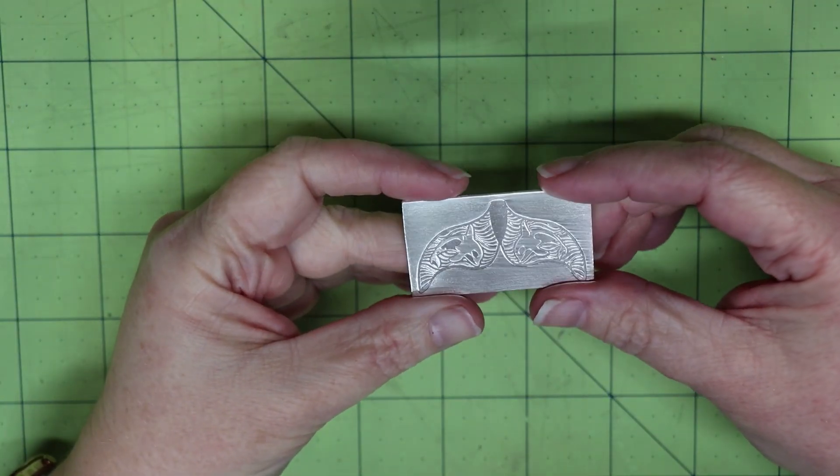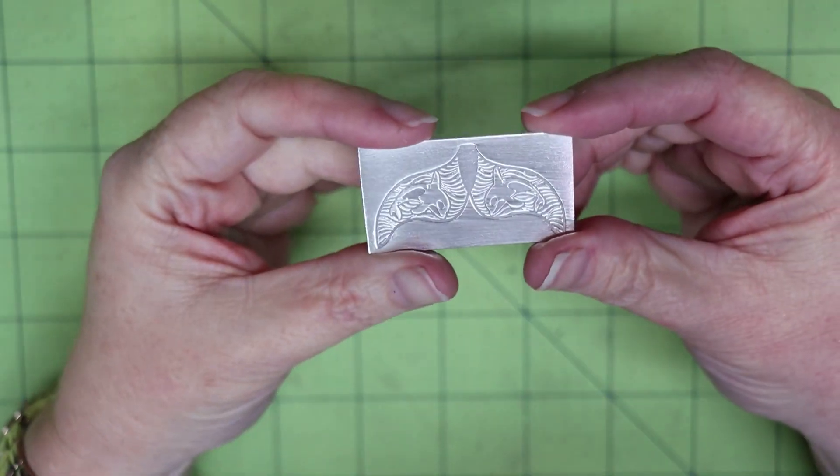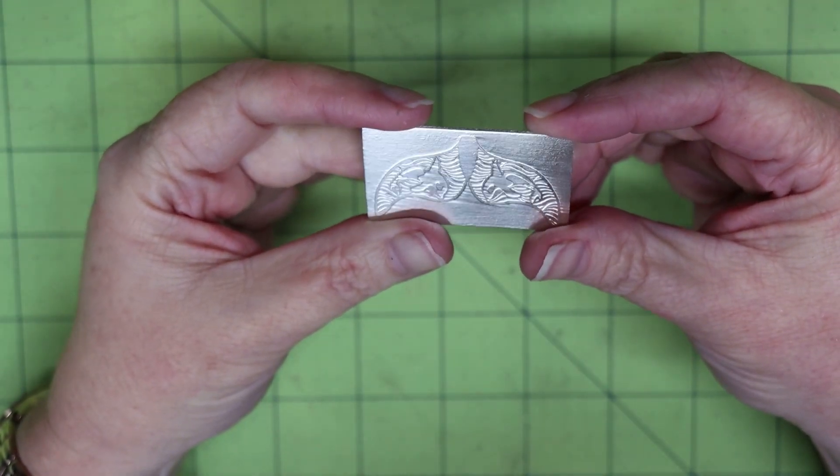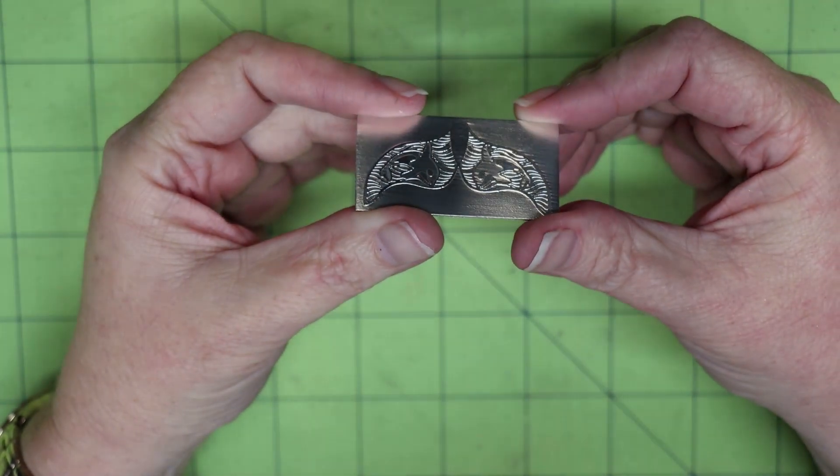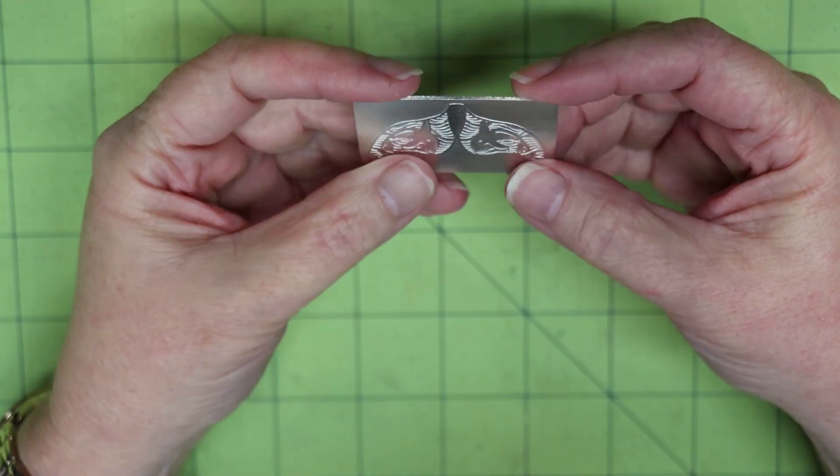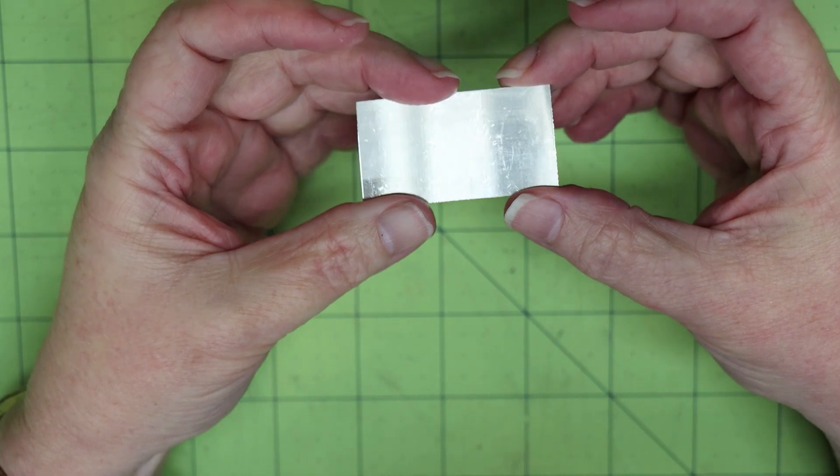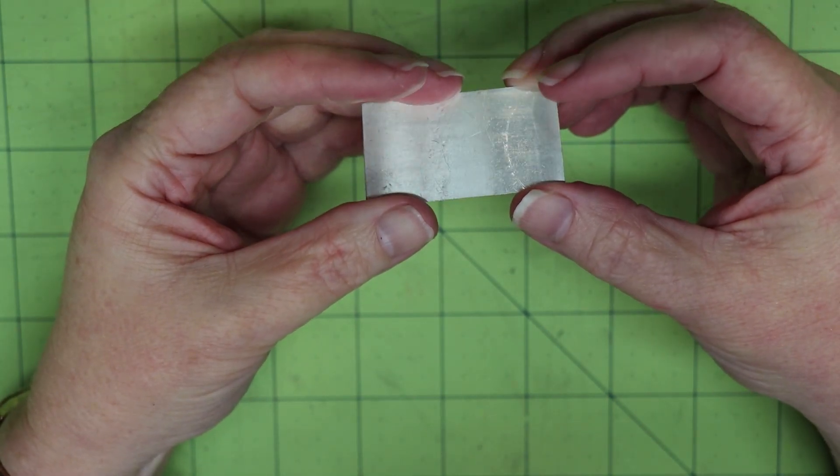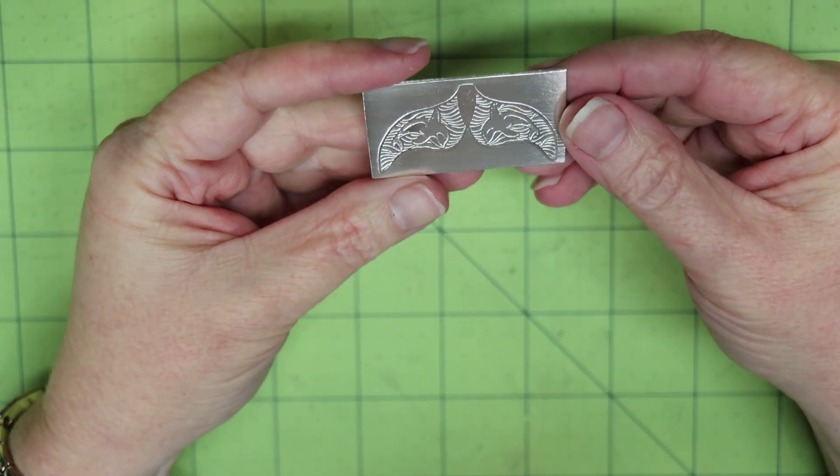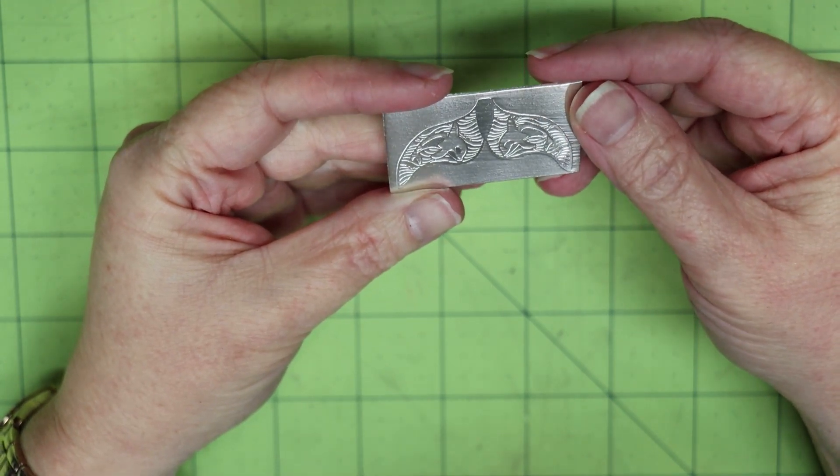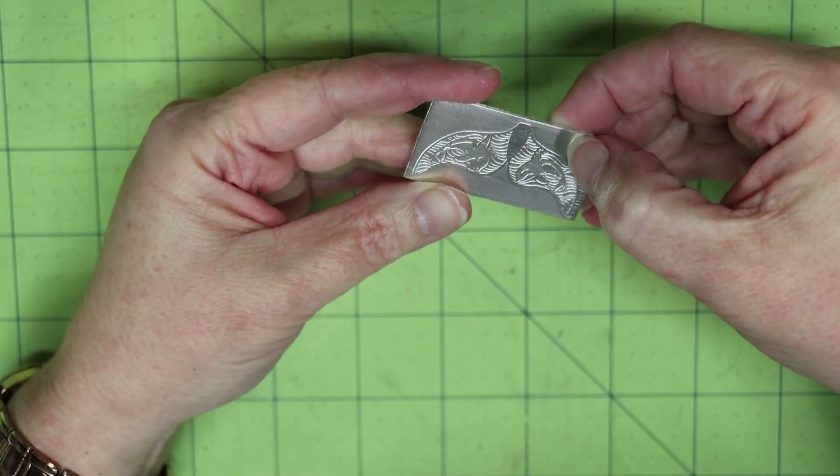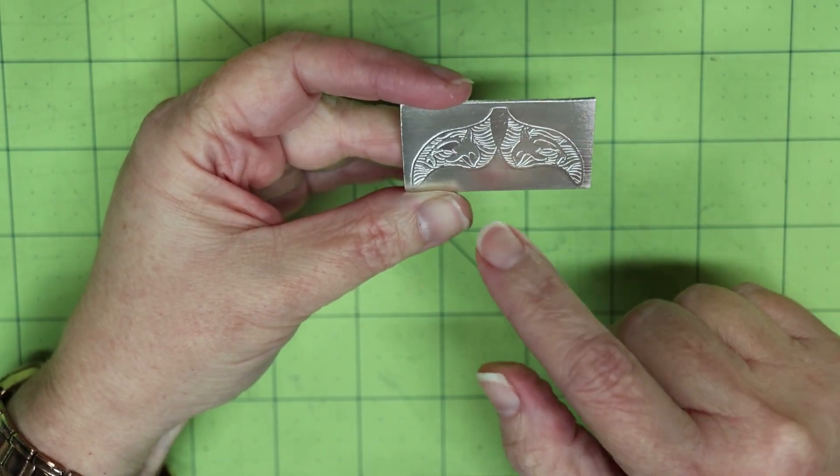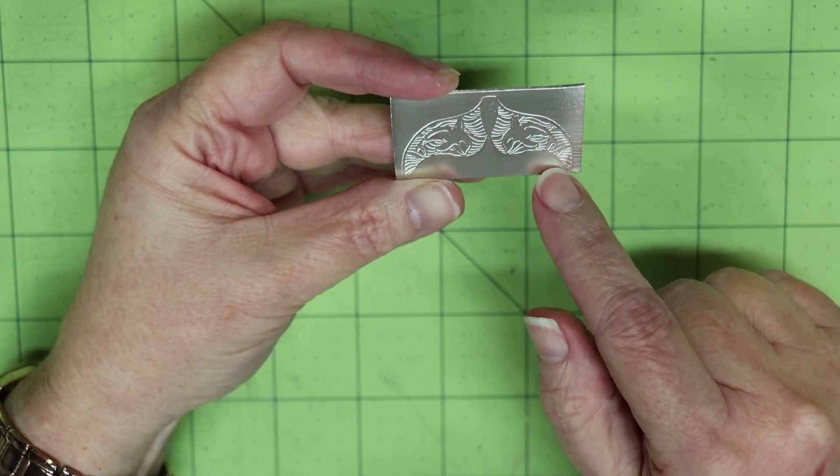So now that we have it rinsed and dried off, we can get a better look at the etching. And that etched pretty well. As you can see, I've got an outline now that I can follow to cut out my piece, so it'll make it quite easy for me.